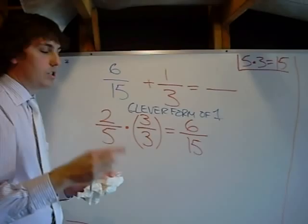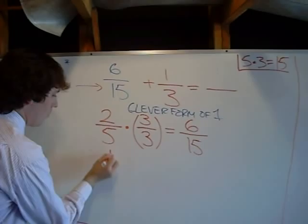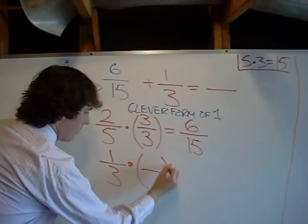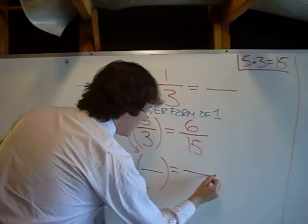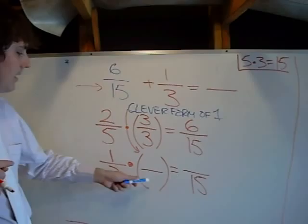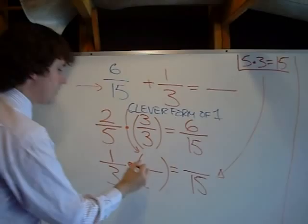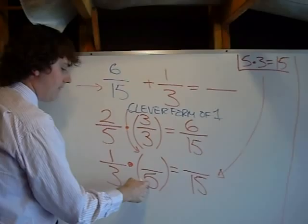Now we're saying 6 over 15 plus 1 over 3 equals, well you still notice we have different denominators. 15 is different than 3. So we have to make the same sort of conversion with the 1 third. So let's do that down here. 1 over 3 times some number over some number, which is just our clever form of 1, is going to equal some number over 15. Again, we want to have the same number over the same number, because we want to multiply it by 1. So 3 times what number equals 15? Right up here again. This is why we did this little box. Be sure to write it down on your paper, it'll help you out.